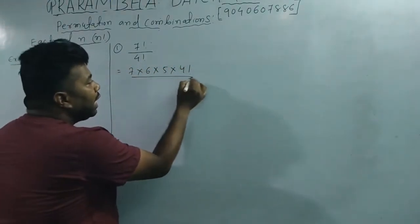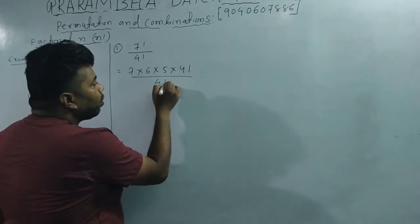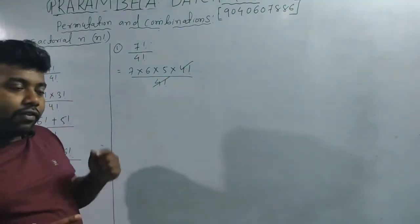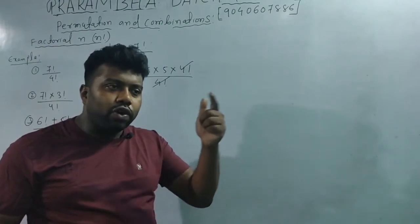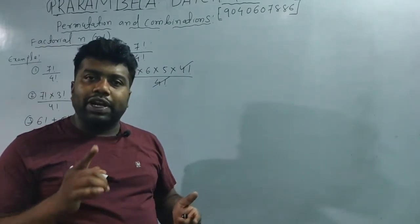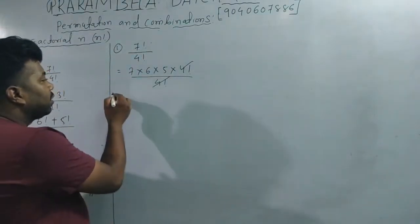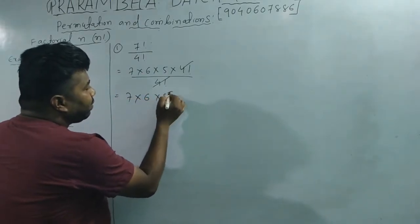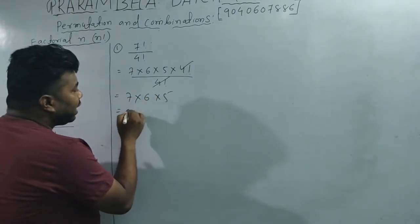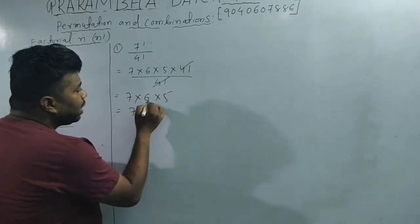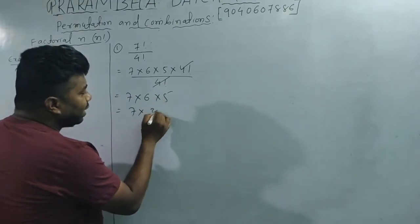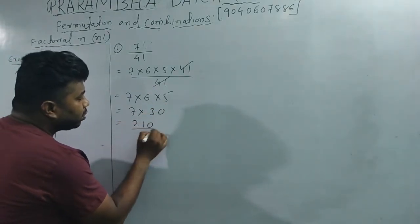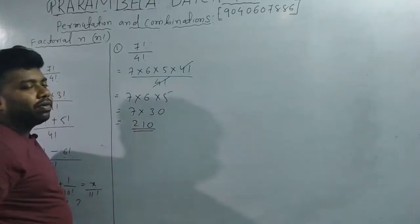The 4 factorial in the numerator and denominator cancel out. So we are left with 7 × 6 × 5. That gives us 7 × 6 = 42, and 42 × 5 = 210. So the final answer is 210.